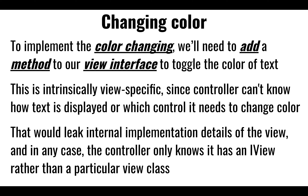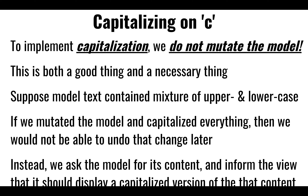For changing the color, we're going to add a method that allows us to toggle the color of the text. For capitalizing on C, notice that we're not going to mutate the model — the model will always hold the same string. We're not going to go in and actually change all the characters to be capital. What we're doing is only changing and transforming it for the view of the user. There's no need to change the model because when you let the key go, it will be uncapitalized. So there's no need to keep track of that transformation — it's only for the user's representation, and that's true for many things.